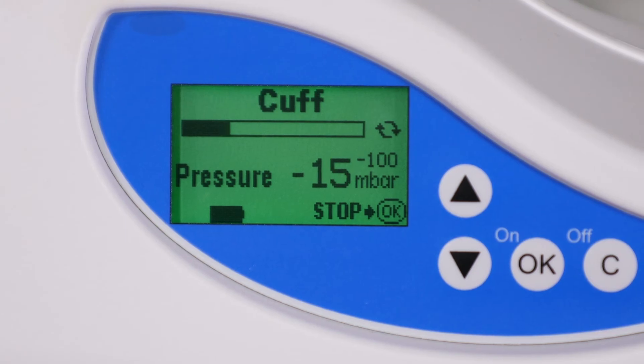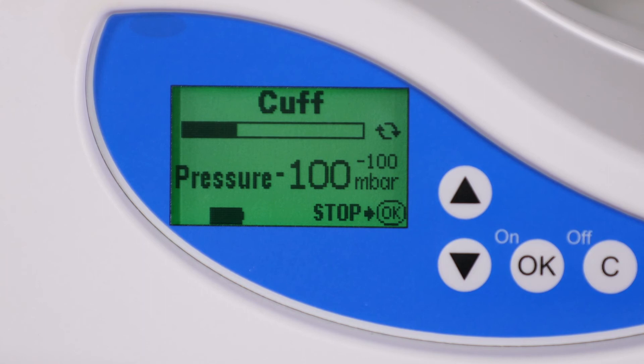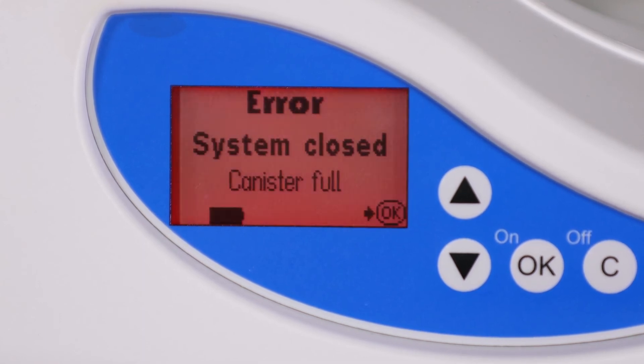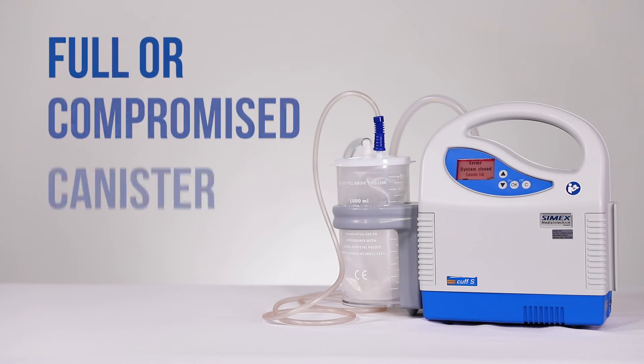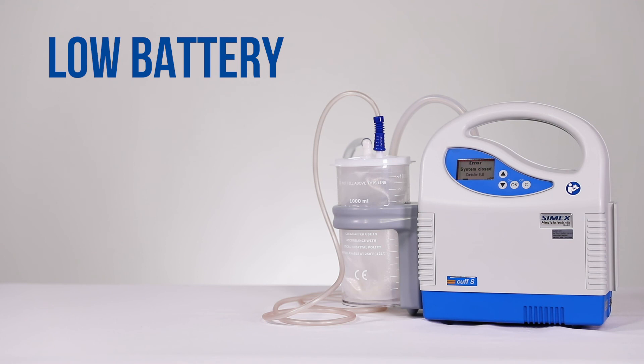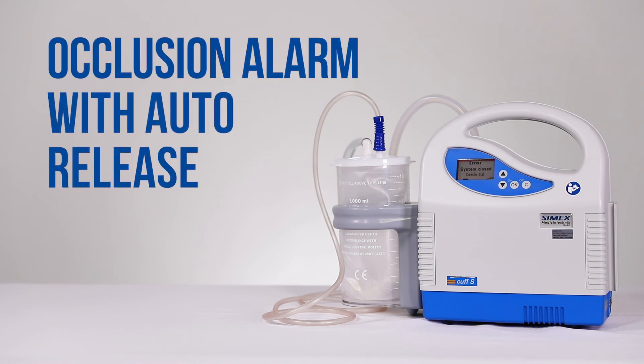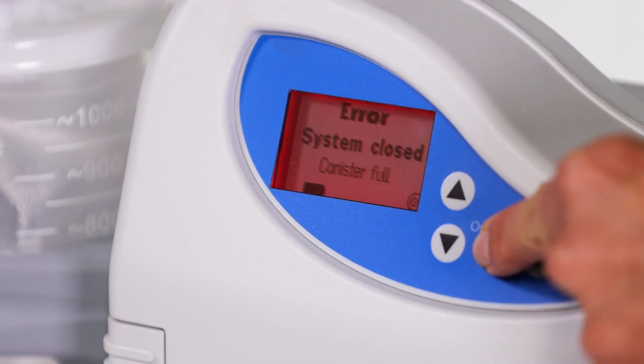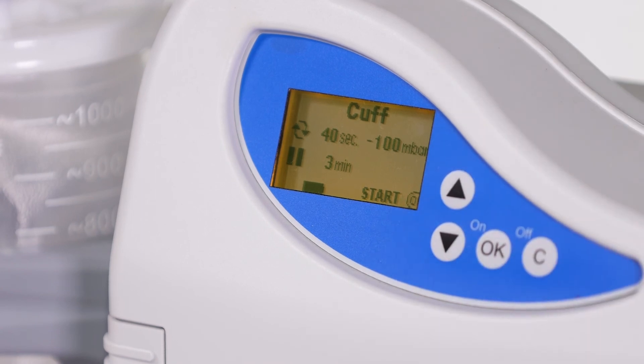The pump has an audible and visual alarm to notify the clinician of an error message. The screen will turn red with the readout describing the error. Errors can include a full or compromised canister, the system has air leakage, a low battery, or an occlusion alarm with auto-release. To silence the alarm, press OK and make the necessary corrections.